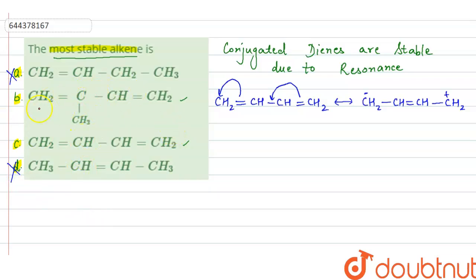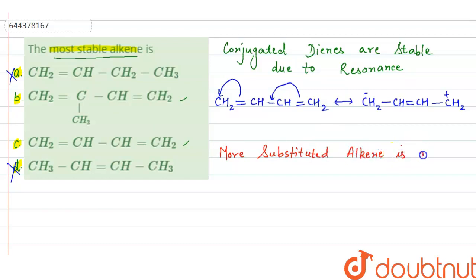Basically both B and C are the same structure, just the difference is that in option B this carbon has a CH3 group instead of hydrogen. Always remember: more substitution on the double-bonded carbon atom means more stability. More substituted alkene is more stable because as substitution increases, hyper conjugation increases, which provides stability.